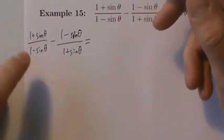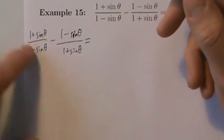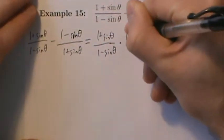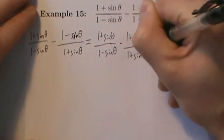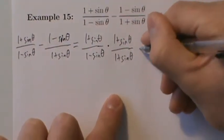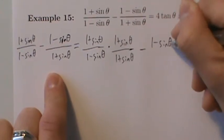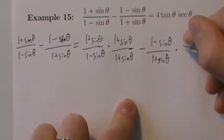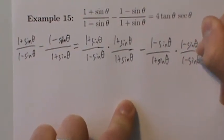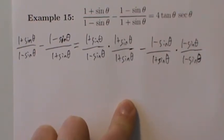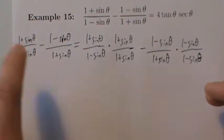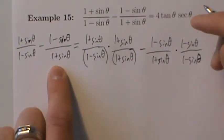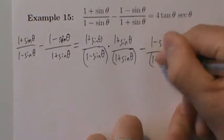So we take the first quotient, (1 + sinθ)/(1 - sinθ), and multiply it by (1 + sinθ)/(1 + sinθ). And the second quotient, (1 - sinθ)/(1 + sinθ), we multiply by (1 - sinθ)/(1 - sinθ). Our common denominator is (1 - sinθ)(1 + sinθ) — we already have (1 - sinθ) in the first, so we multiply by (1 + sinθ); and the second has (1 + sinθ), so we multiply by (1 - sinθ).